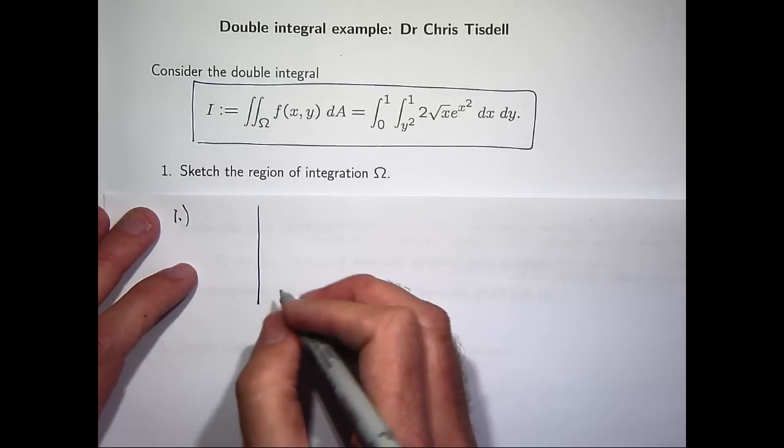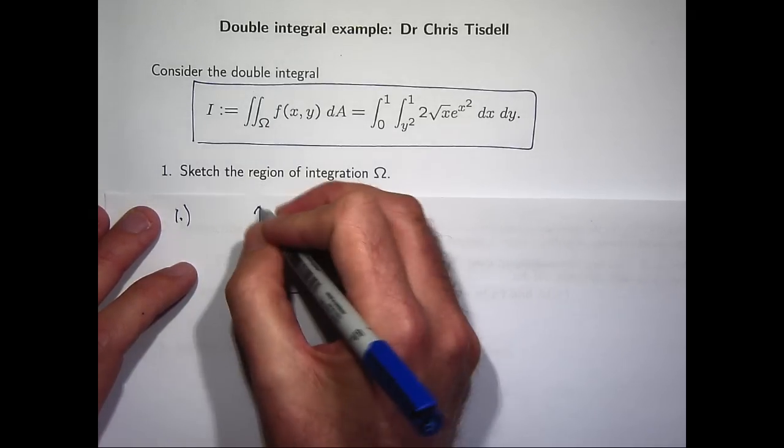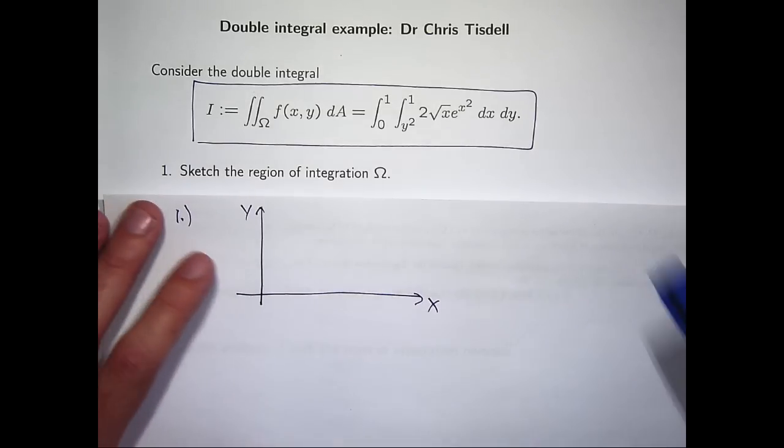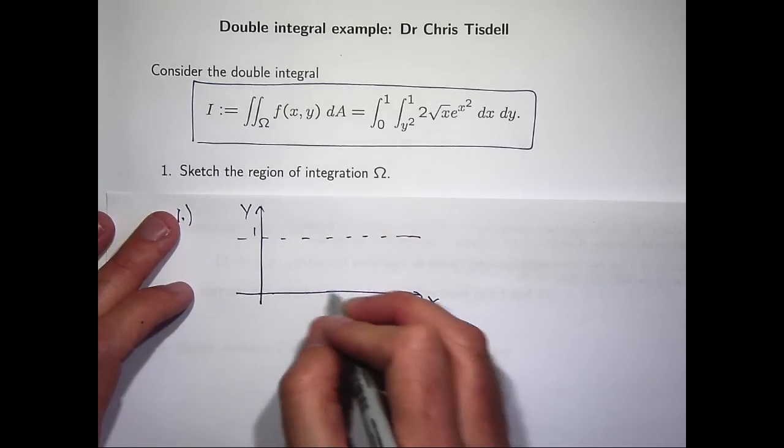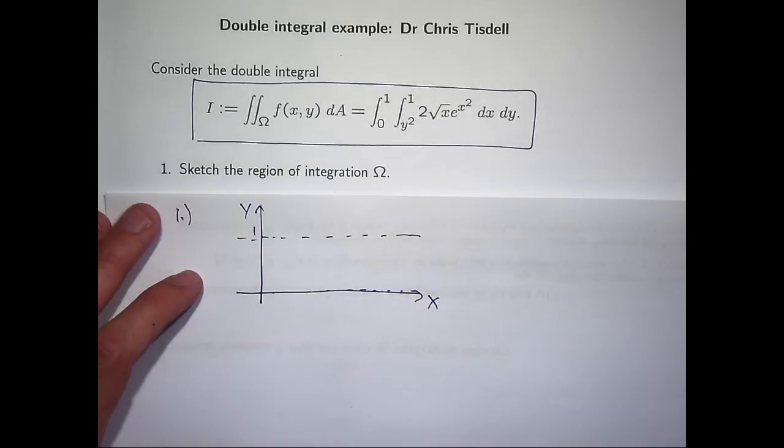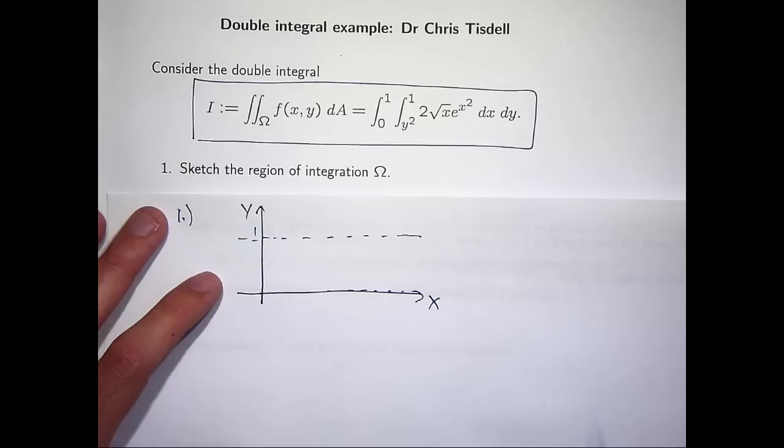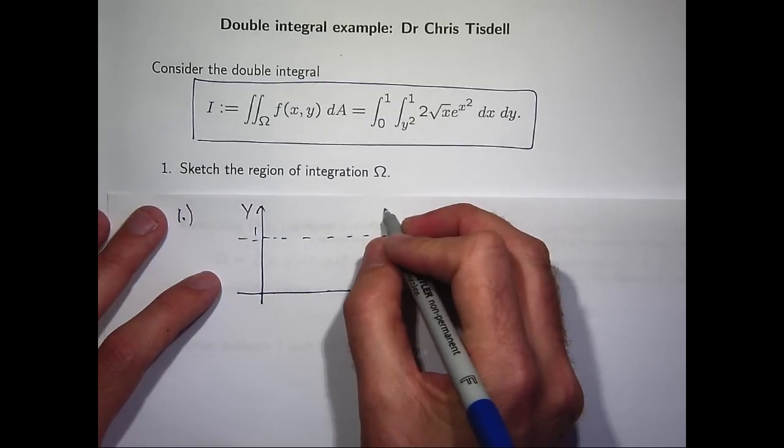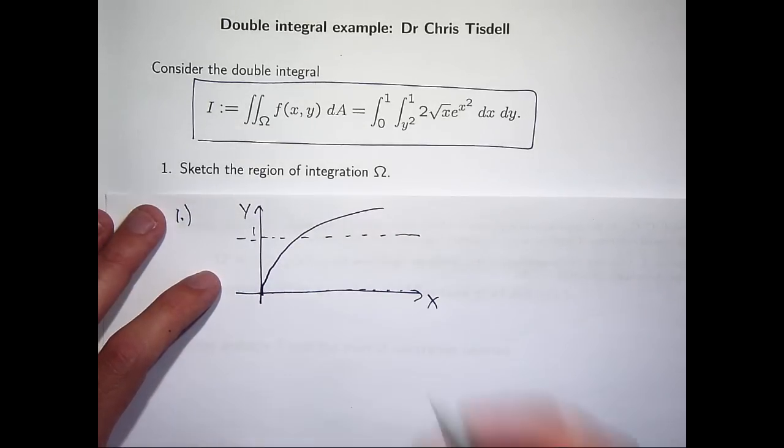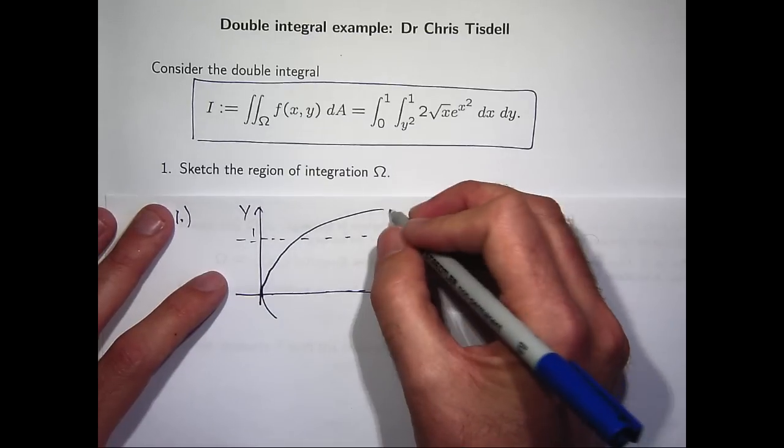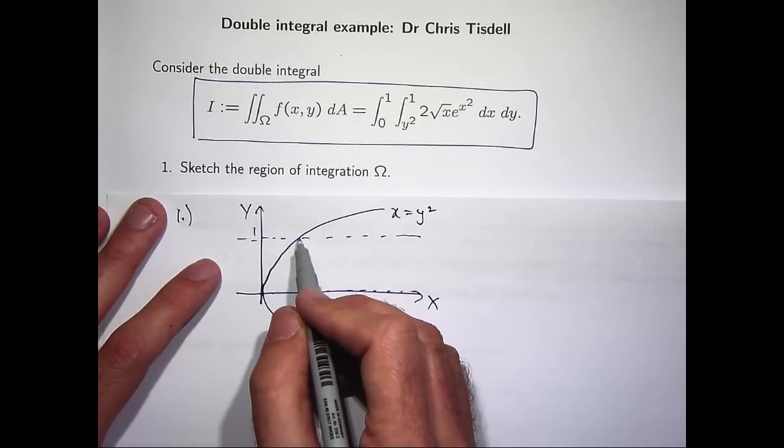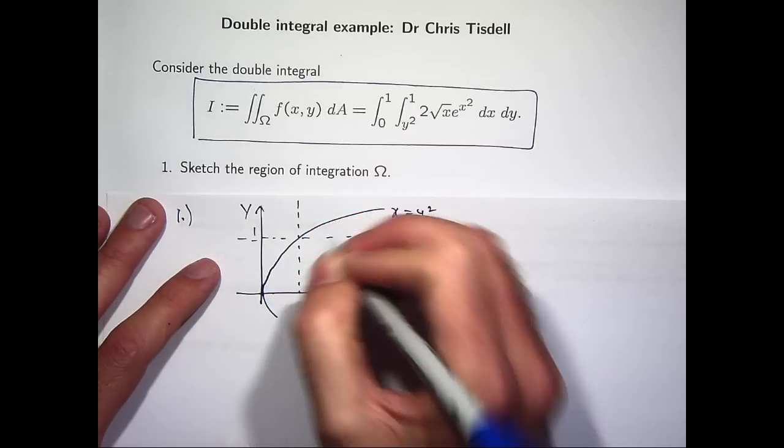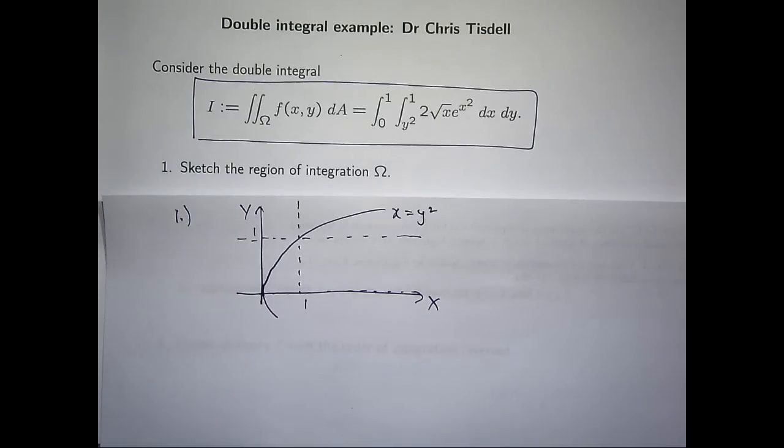So if I wanted to sketch in those curves, I'll sketch in the curves y equals 0 and y equals 1. Y equals 0 is just the x-axis. The curve x equals y squared, that's going to be a parabola on its side. And the line x equals 1 is going to be a vertical line. And actually, it's going to cut here. So I've drawn in my bounding curves.